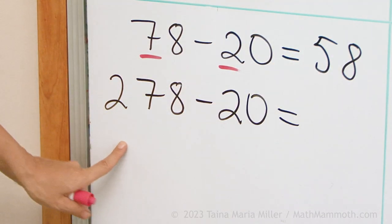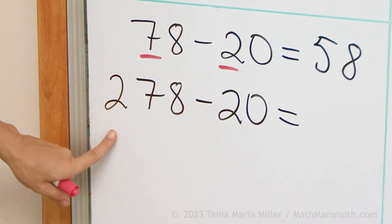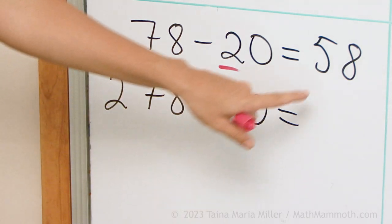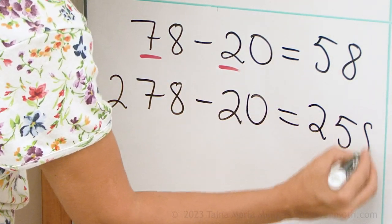58. Now here we have the exact same problem except it has 200, 278 minus 20. So the answer is the same, it just has 200, 258.